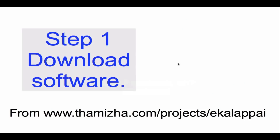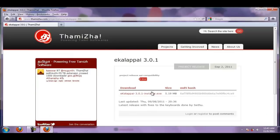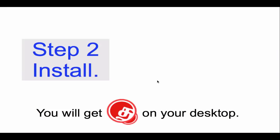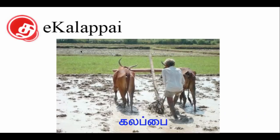So how do you do it? First, you download the software. Go to the website tamra.com and go to the URL slash projects slash eKalape and download the software. Once you've downloaded it, install it and you'll get this icon on your desktop.